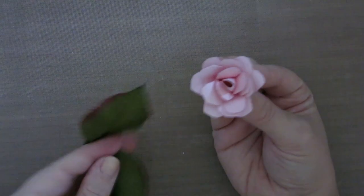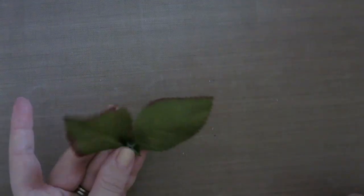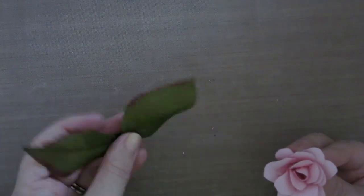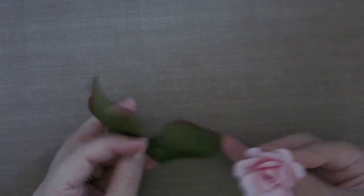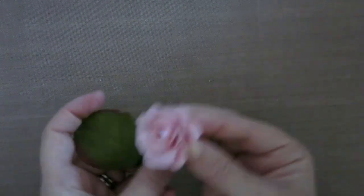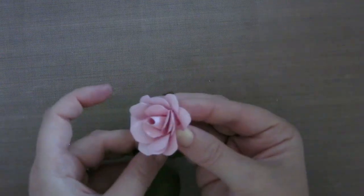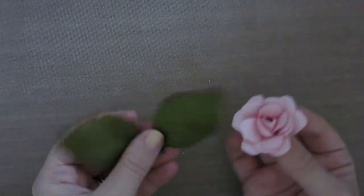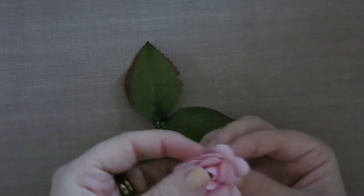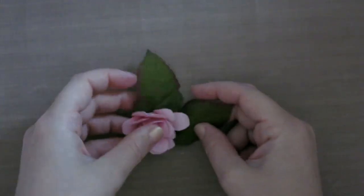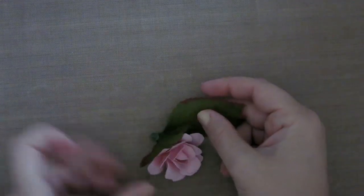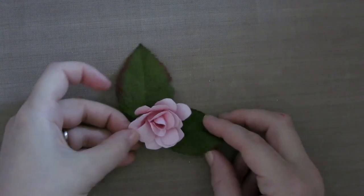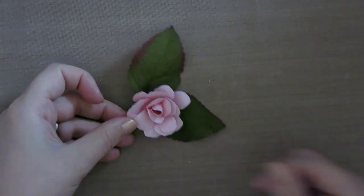So I've got some leaves here from a fake flower, but you could certainly cut some out of construction paper and just play with the paper a little bit or cardstock until it sort of takes on an organic shape. And that's it. You've made a paper rose.